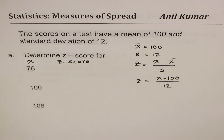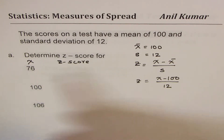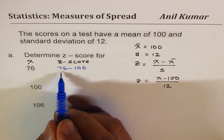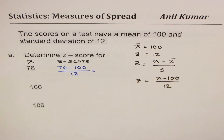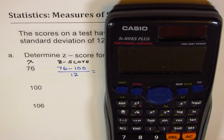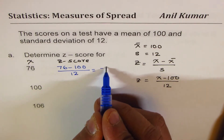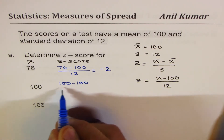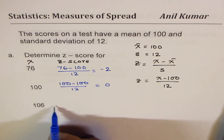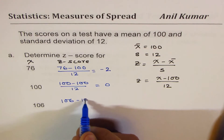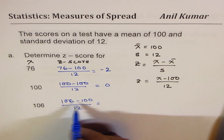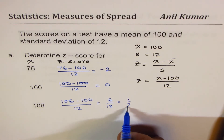For 76: X is 76, minus 100 — since 76 is less than 100 we expect a negative value — divided by 12. That gives us 76 minus 100 divided by 12, equals minus 2. For 100: since 100 is just the mean value, it is expected to be 0 — 100 minus 100. For 106: 106 minus 100 over 12. Since 12 is standard deviation and 6 is half the standard deviation, you get 6 over 12, which is 0.5.